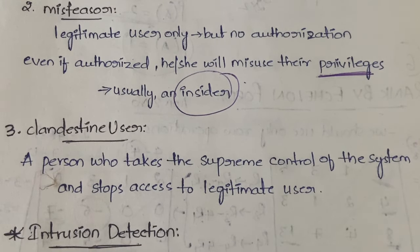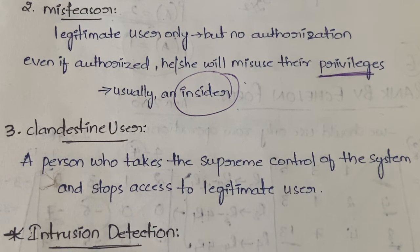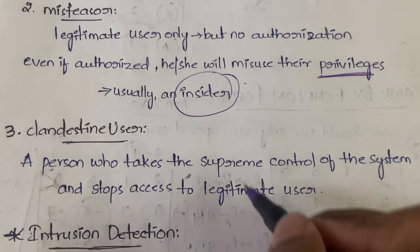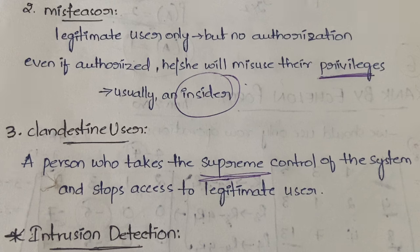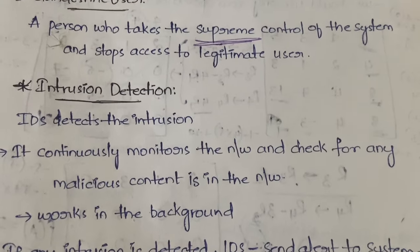The third type is the clandestine user. A clandestine user is a person who takes supreme control of the system and stops access to the legitimate user — meaning that person takes complete control of your computer such that even you cannot use it. So the three types of intruders are: masquerader, misfeasor, and clandestine user.